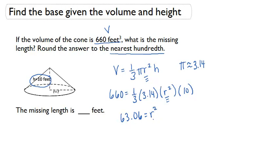And because this clearly is not a perfect square, I'm going to need my calculator to find the square root of 63.06. And that equals approximately 7.94. And that's the radius. The radius is 7.94 feet.